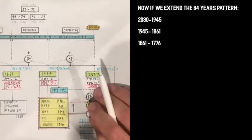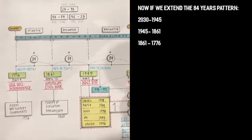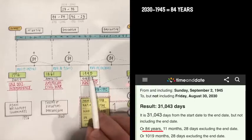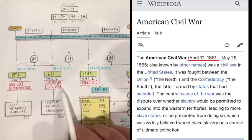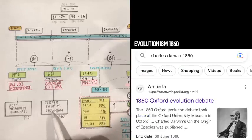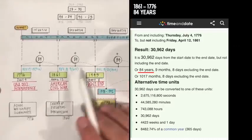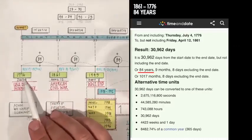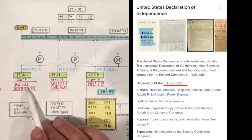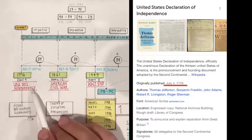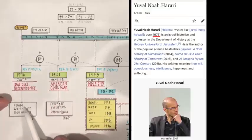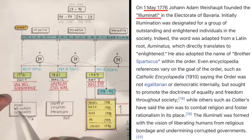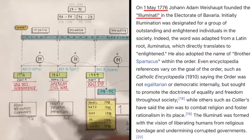Let's pause that for a second and take a look at what happens when we shift back 84 years from 1945. We land in 1861, which is the start of the American Civil War and is right around the time when Darwin publishes his ideas about evolution. And 84 years back from that takes us to 1776, which happens to be the year of the Declaration of Independence of the United States. But it's also the same exact year when Adam Weishaupt founded the Illuminati.